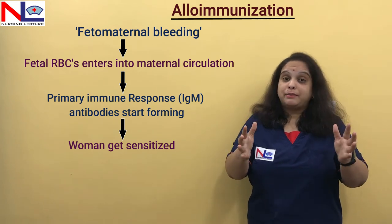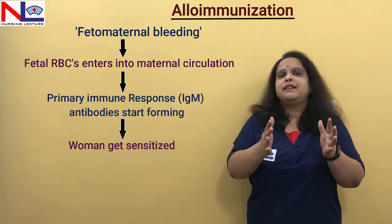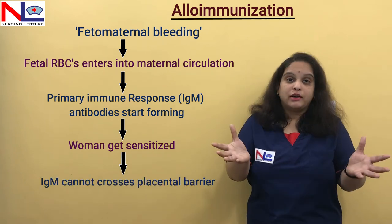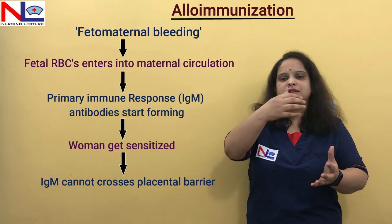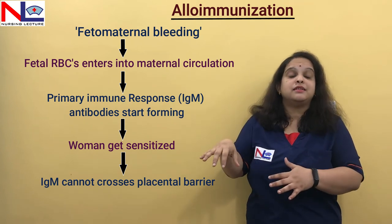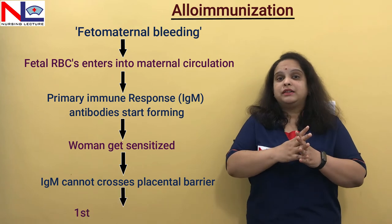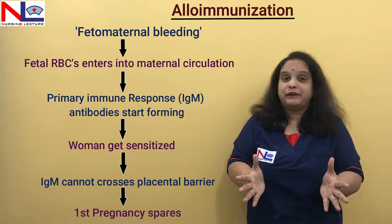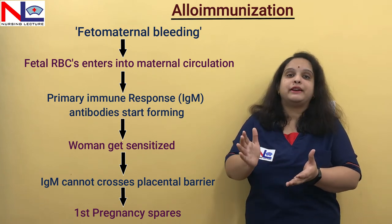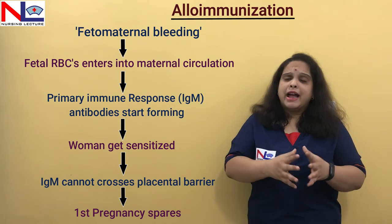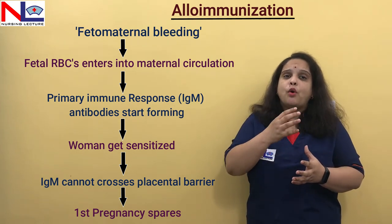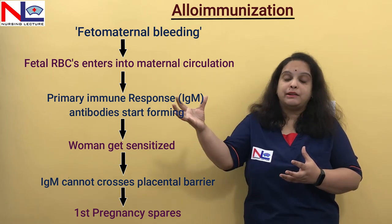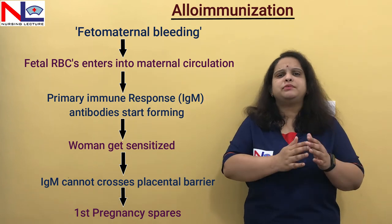Now what happens in this first pregnancy — the pregnancy usually spares, because the IgM antibodies are larger molecules and they are not able to cross the placental barrier and enter in the fetus's circulation. So it may cause no effect in that particular pregnancy — the first pregnancy spares. Also, the immune response won't act immediately; it takes a longer time — around six months — to form antibodies. So thereby the first pregnancy spares.